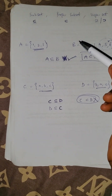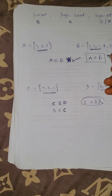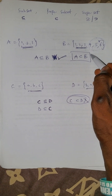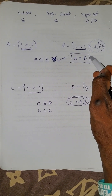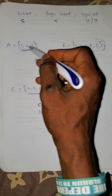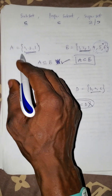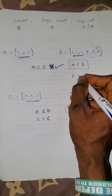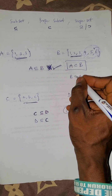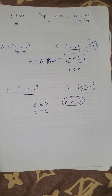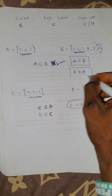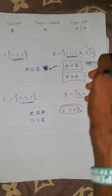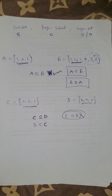Now, if we have the elements of A found in B, and some elements of B that cannot be found in A, I said that A is a proper subset of B — then B is a superset of A. If A is a proper subset of B, then the larger one, B, is the superset of A.